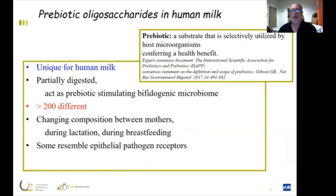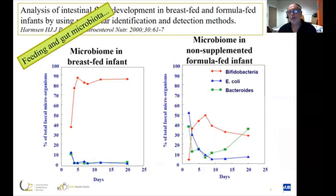Those human milk oligosaccharides have a prebiotic effect. As just heard about the definition of prebiotics by Professor Sajewska, prebiotics stimulate the development of a bifidogenic microbiome. They are very unique for human milk. More than 200 different structures have been discovered in mother's milk, and the composition of human milk oligosaccharides differs over time.